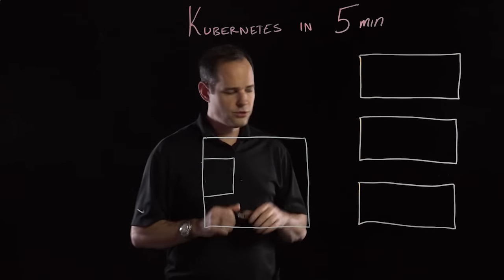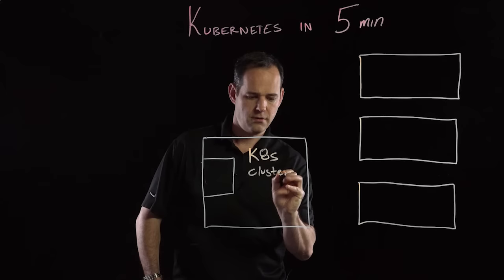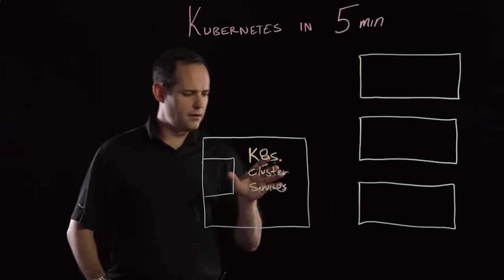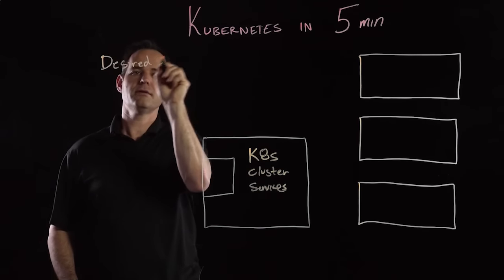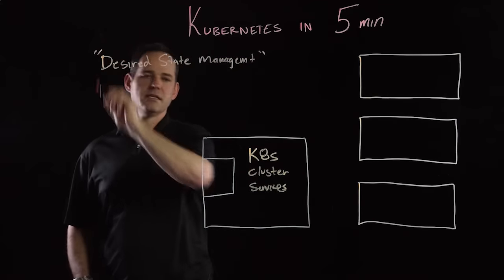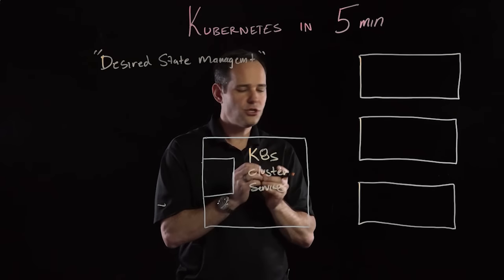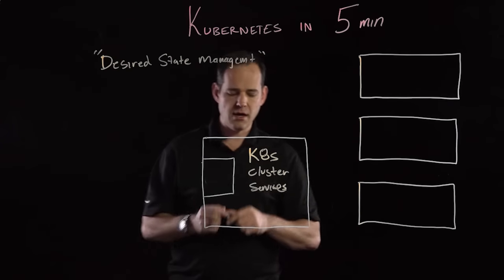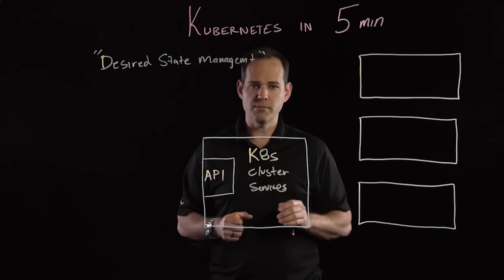There are a few different architectural components, two of which I'm going to talk about. The first is the Kubernetes cluster services. The fundamental premise behind Kubernetes is that we can enforce what's called desired state management. What that means is that I'm going to feed the cluster services a specific configuration, and it will be up to the cluster services to go out and run that configuration in my infrastructure. One of the main components I want to call out is this API that sits in front of all this — the API services.